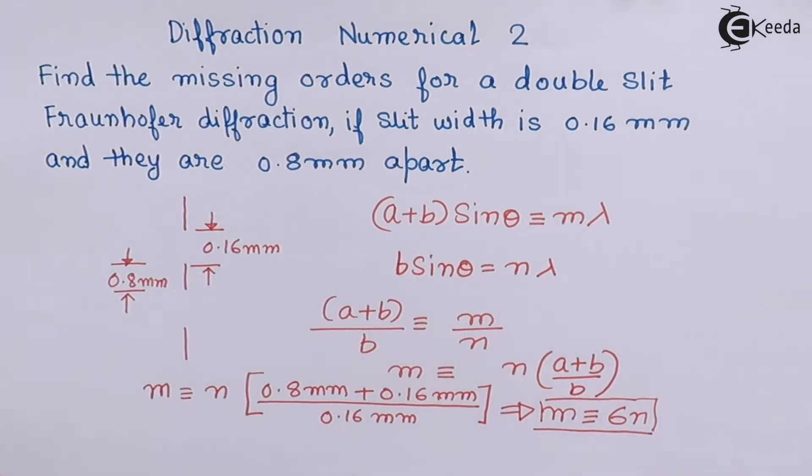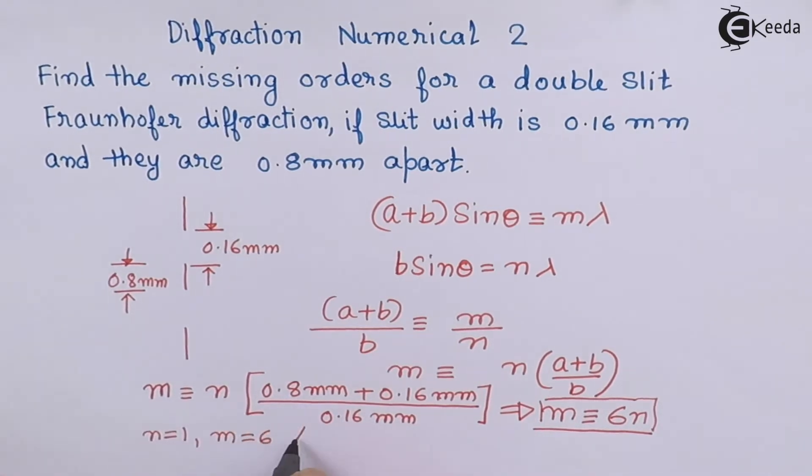So the missing orders will be if n is equal to 1 then the missing order will be m is equal to 6. Similarly if n is equal to 2 then the missing order will be 6 into 2 that is going to be equal to 12. And if n is equal to 3 then the missing order is going to be m is equal to 18 and so on and so forth.